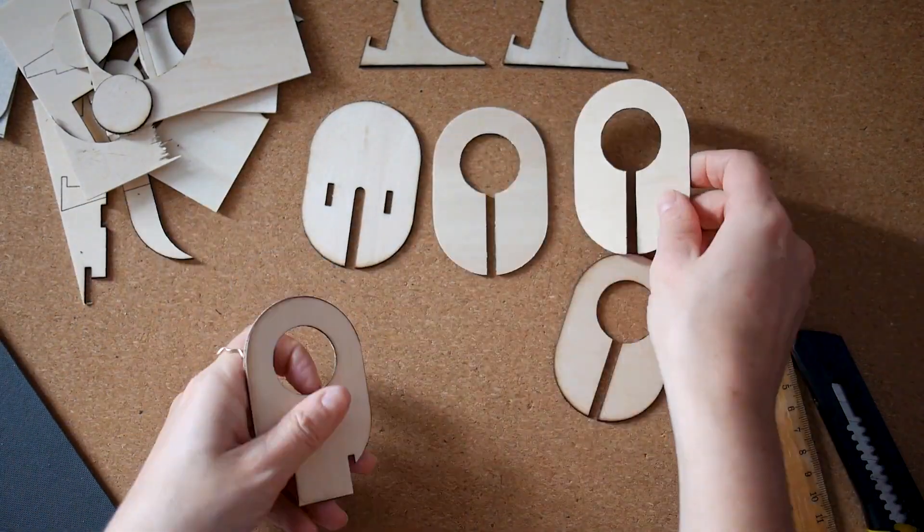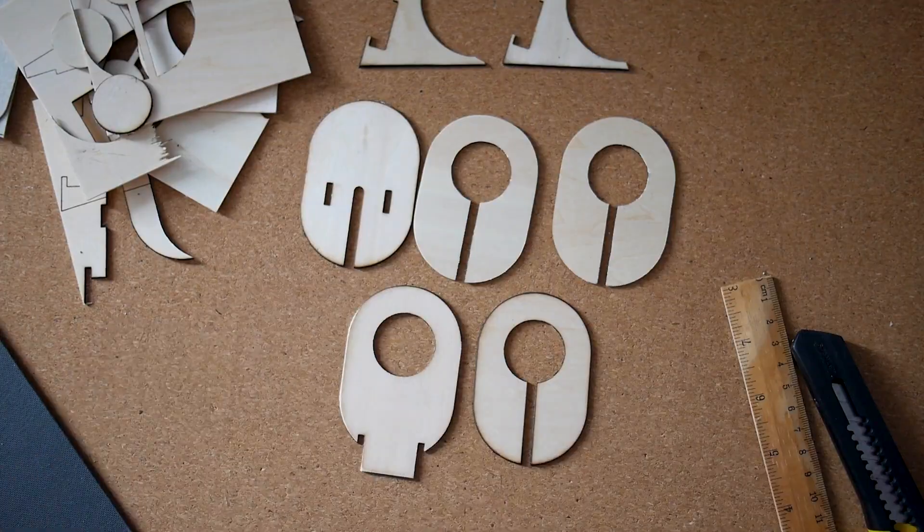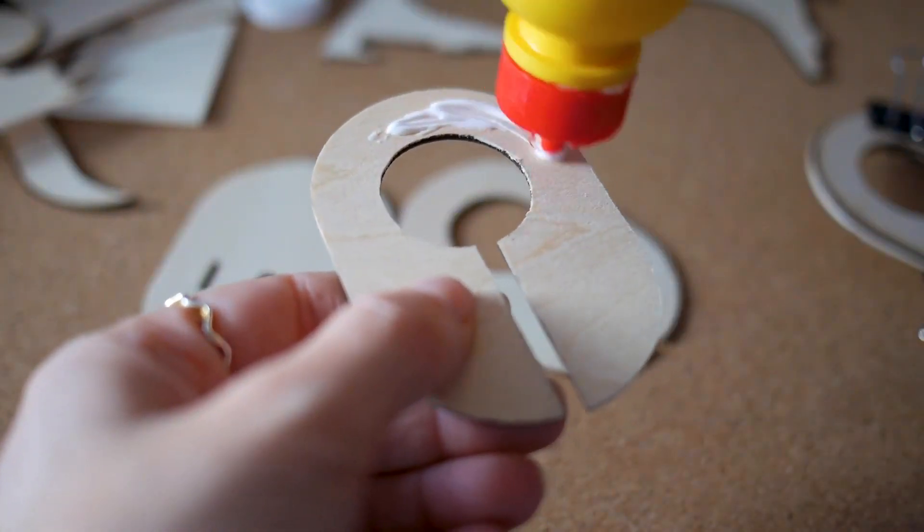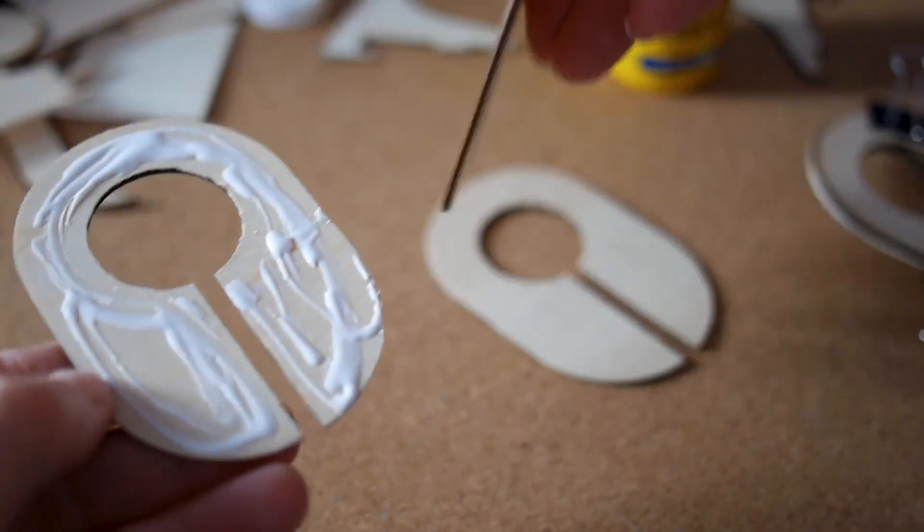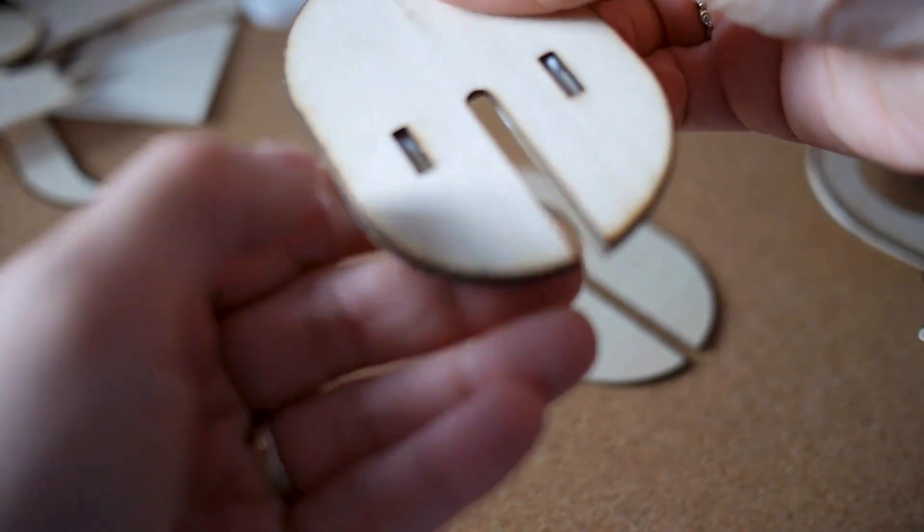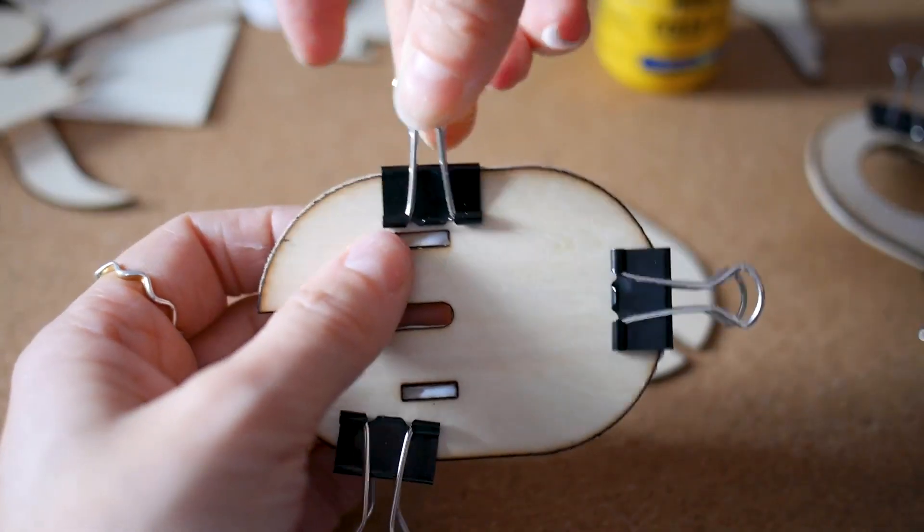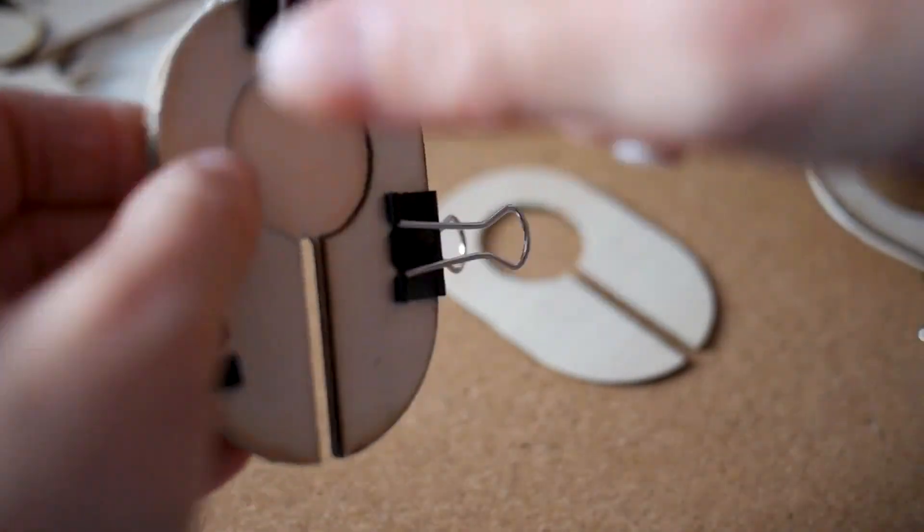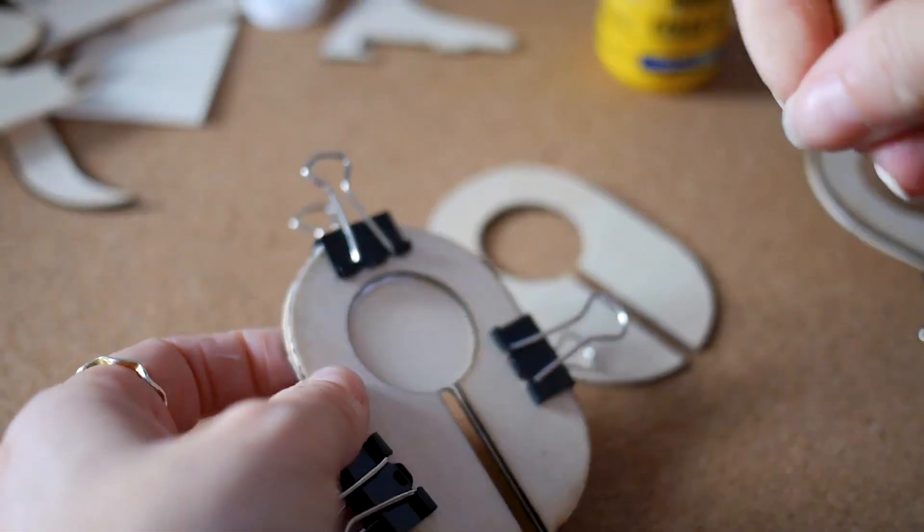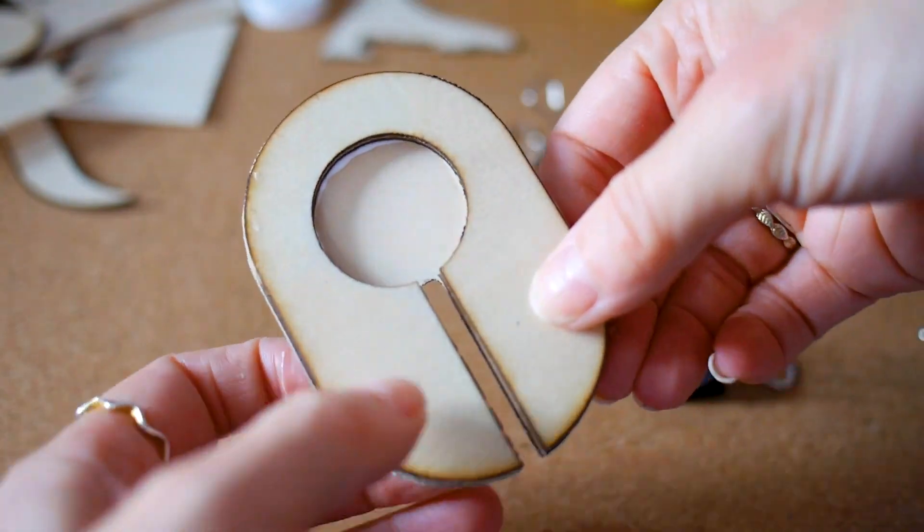Now I have the back and the front and a few layers for the middle. I'm going to join the middle parts together with the back, like so, and a few of the middle parts with the front.